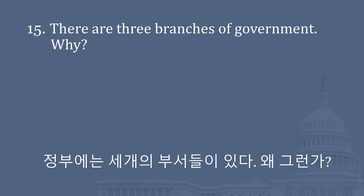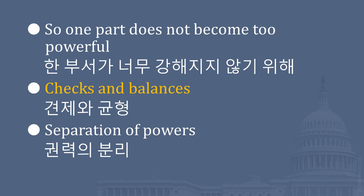There are three branches of government. Why? So one part does not become too powerful. Checks and balances. Separation of powers.